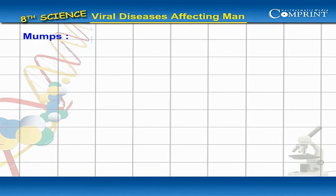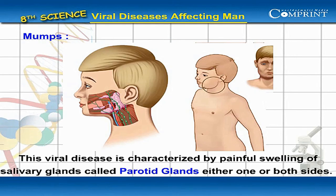Mumps: This viral disease is characterized by painful swelling of the salivary glands called parotid glands, either one or on both sides.